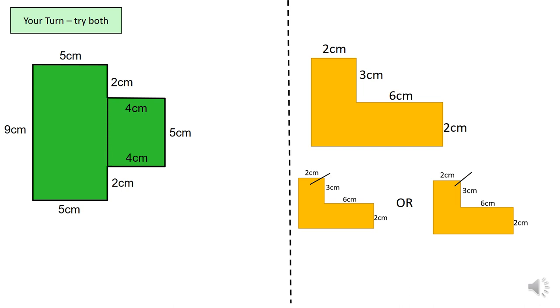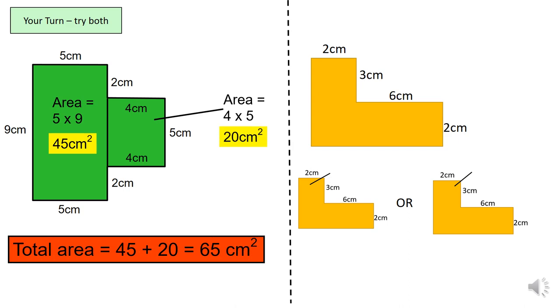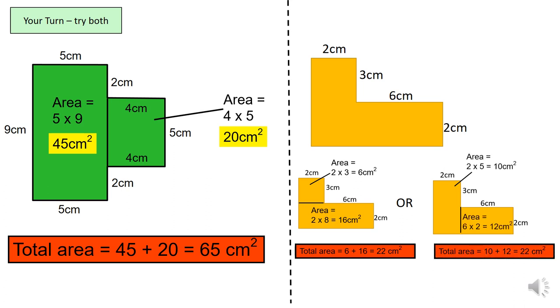Okay, so the answer for the first one, we would have all done the split vertically and we would have had an area of 45 centimeters squared and an area of 20 centimeters squared which would have given us 65 centimeters squared. And for the second one, we would have got 22 centimeters squared this way and if you did the split this way, we would have got 10 and 12 which would have also given us 22 centimeters squared. Now, as long as you ended up with the 22 centimeters squared, either way is correct.